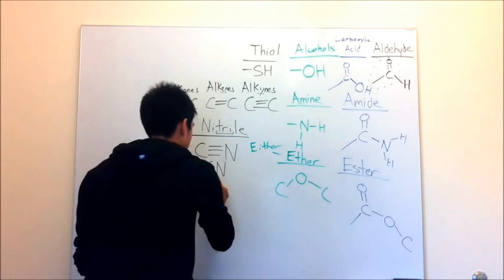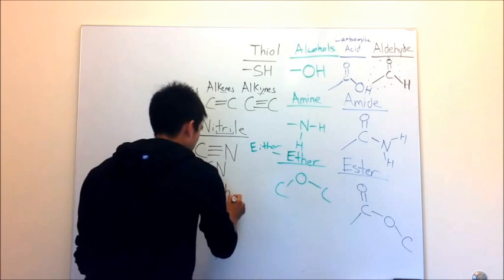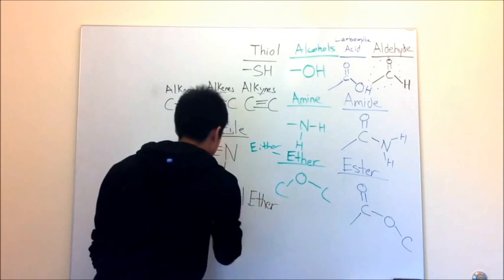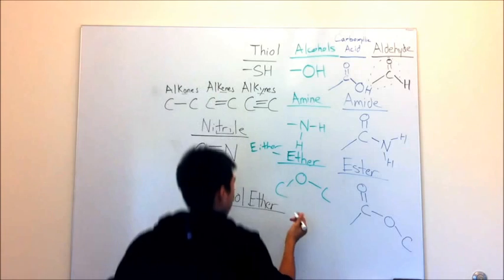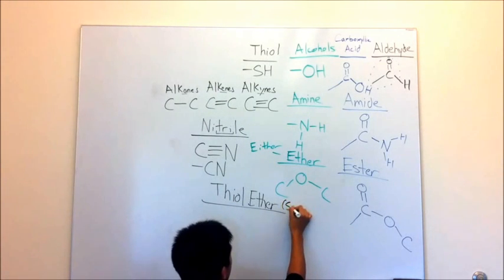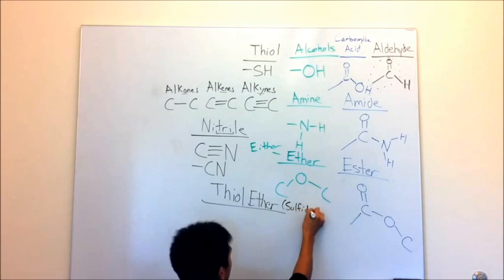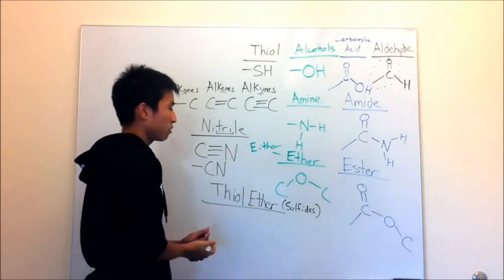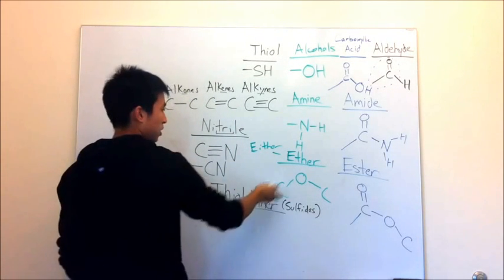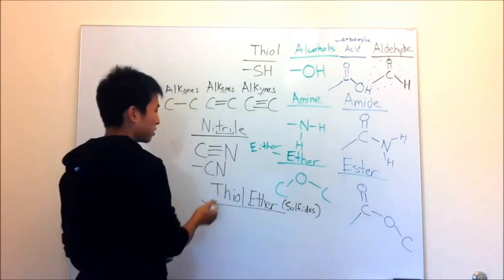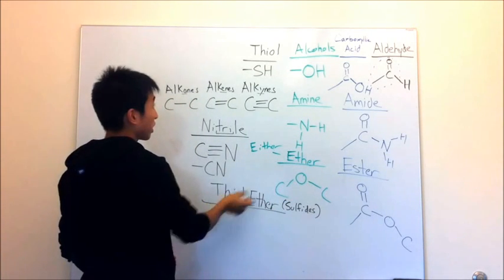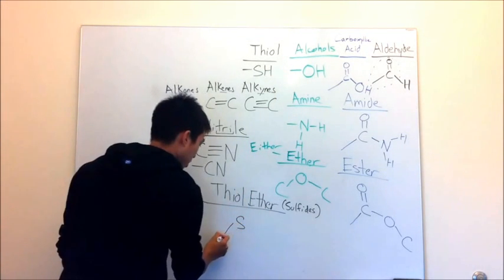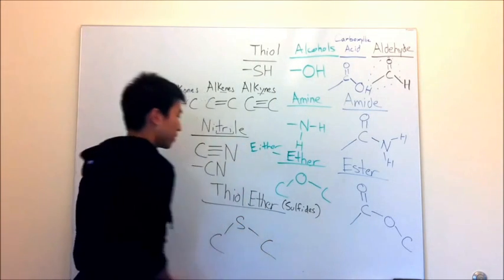Thioethers — and sometimes your professor might call them just sulfides. When you see 'ether,' think of 'either,' so you come back to that ether structure. But now, because there's a thio here, you switch the O with an S, and you keep your carbon chains on either side. And that's a thioether.